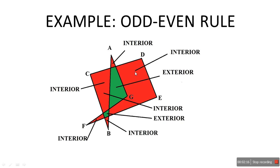For this region, we take a point P and draw a line to the outside. How many edges are intersecting? Only 1. Since 1 is an odd number, odd means it is an interior point. Over here also, draw a line from this point to the outside. How many edges are intersecting? 1. Since 1 is an odd number, odd means interior.